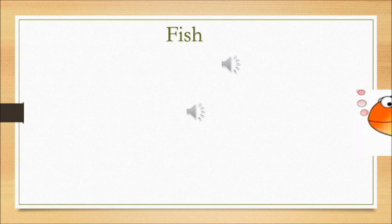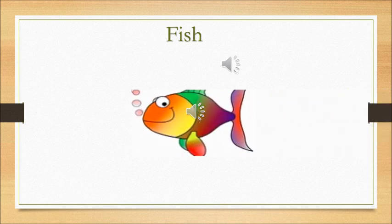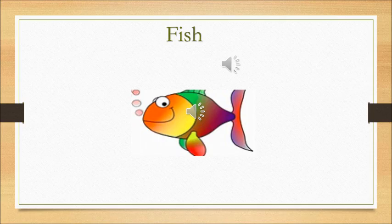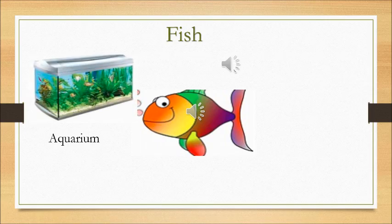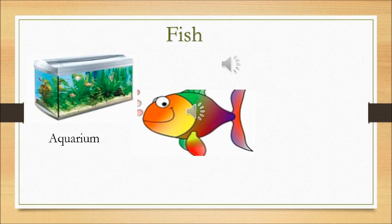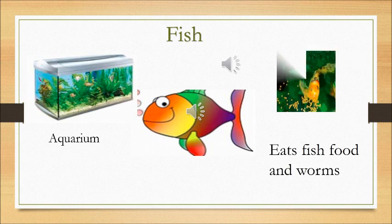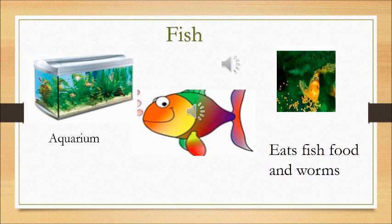Now moving on to the next one is a fish. There are different types of fishes. Some they call it a goldfish, a starfish. There are very small, small types of fishes. And they stay in an aquarium. They stay in an aquarium. And they love to eat fish food or worms. Can you see small, small, these fish food that they love to eat? They love to eat fish food and worms.